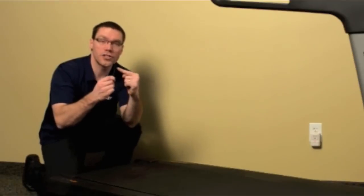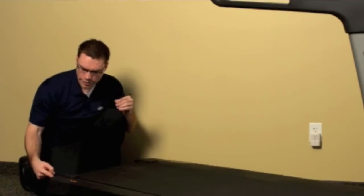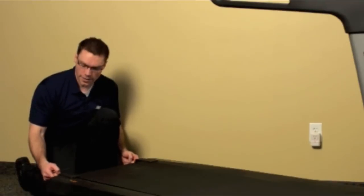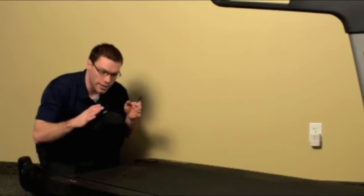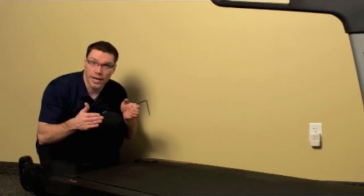So using the large end of my wrench that came with the treadmill, I'm going to insert it into the hole on either side at the back here. And there's a bolt down inside that hole, which when I adjust those two bolts on each side together, it pulls the belt tighter.